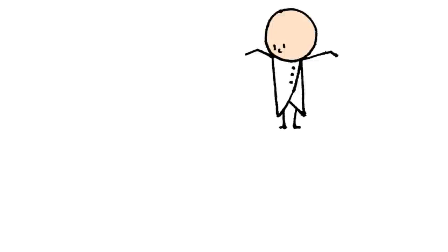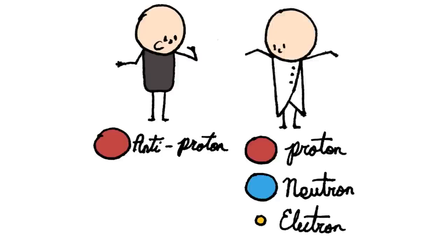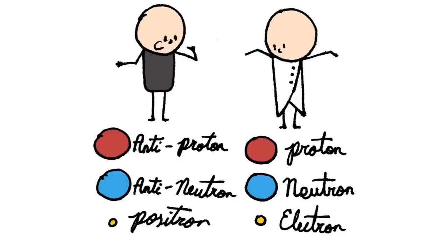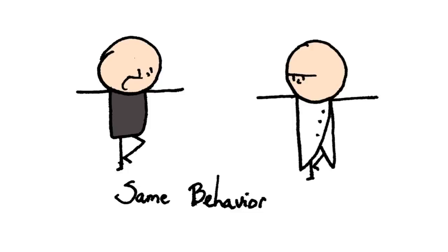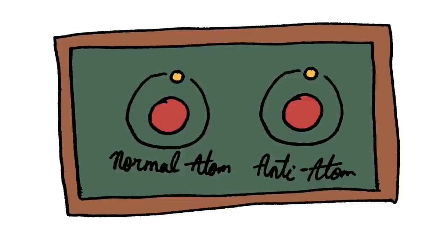You do realize that antimatter doesn't look any different than normal matter, right? Your atoms are made of protons, neutrons, and electrons. Mine are made of anti-protons, anti-neutrons, and anti-electrons, or positrons. But they both behave the same way, and they both emit the same kinds of light. So it's actually very difficult to tell a normal atom apart from an anti-atom.